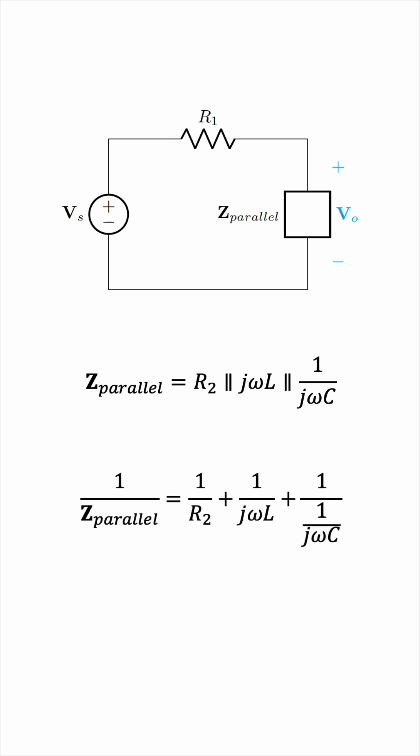1 over 1 over j omega C simplifies to j omega C. And for the 1 over j omega L, let's multiply top and bottom by j. Because we don't like j to be on the bottom, we like to see it on the top.